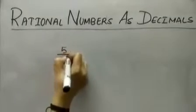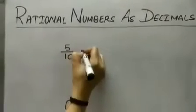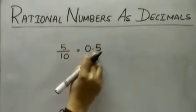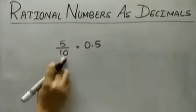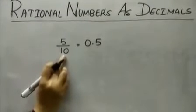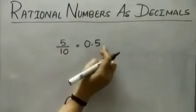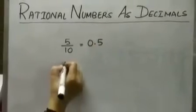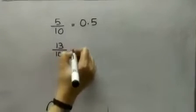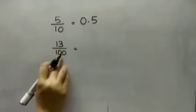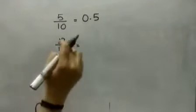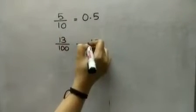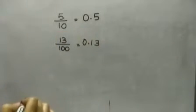Take 5 by 10. If I am going to write this in decimal form, that is 0.5. Count the number of zeros in the denominator and place the decimal that many places from right to left. Now 13 by 100 — how many zeros are in the denominator? 2. Place the decimal 2 places: 0.13.